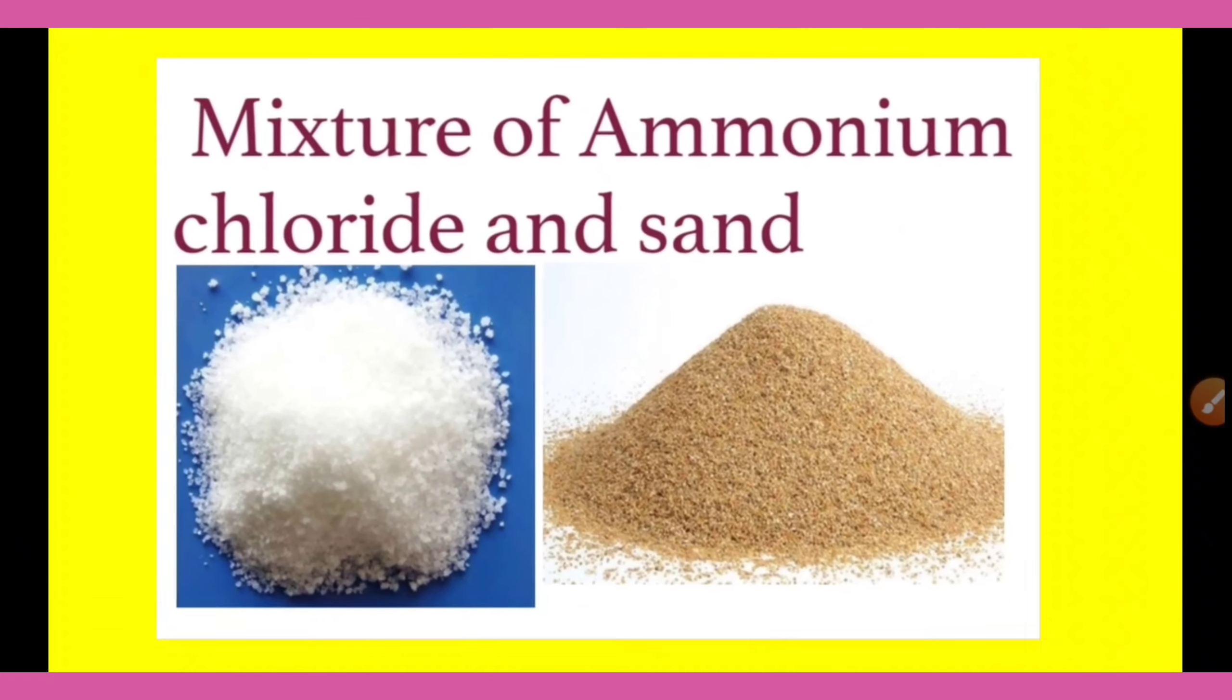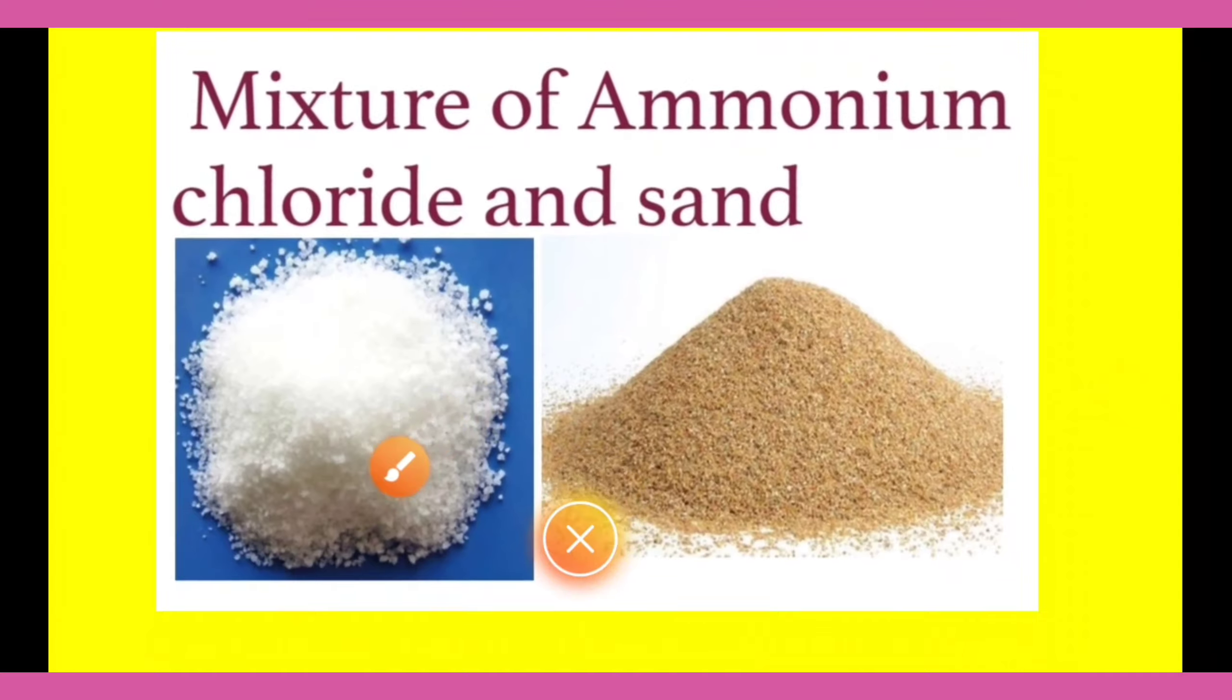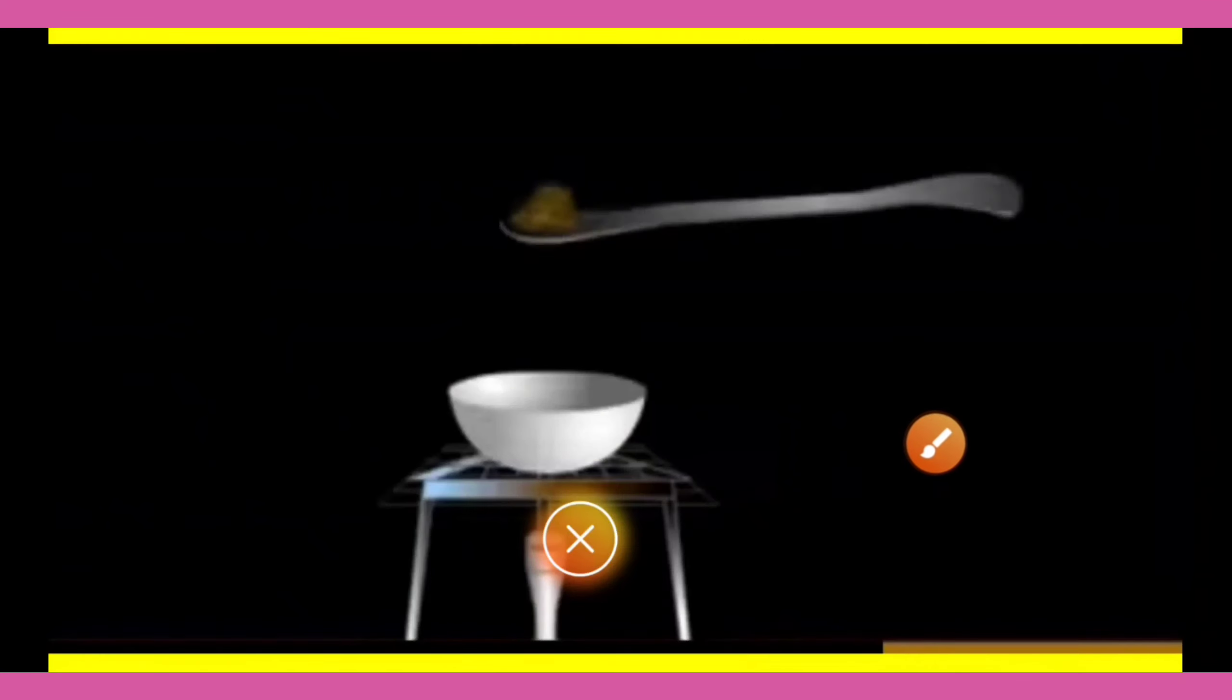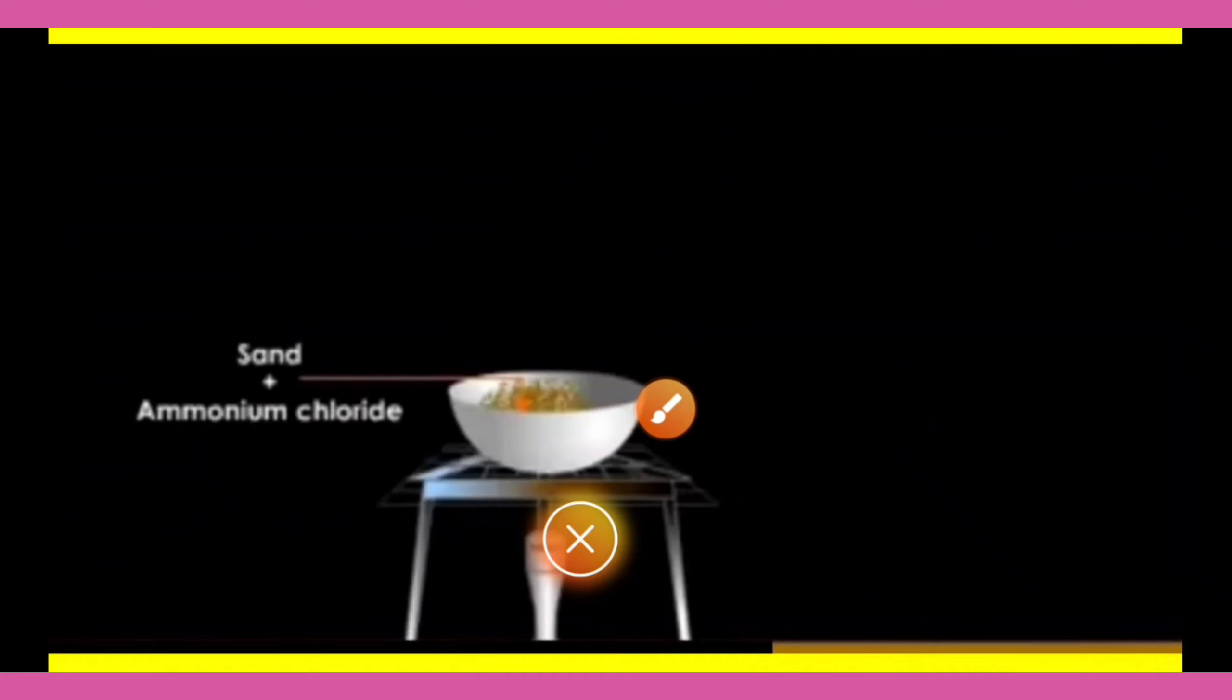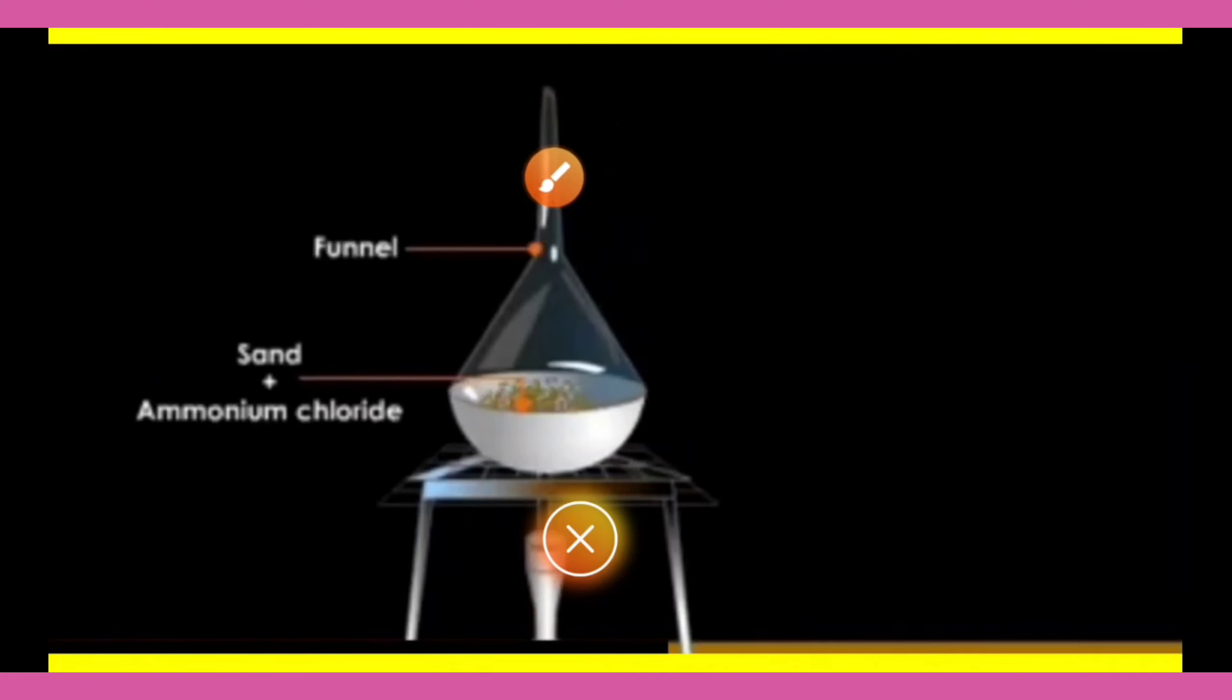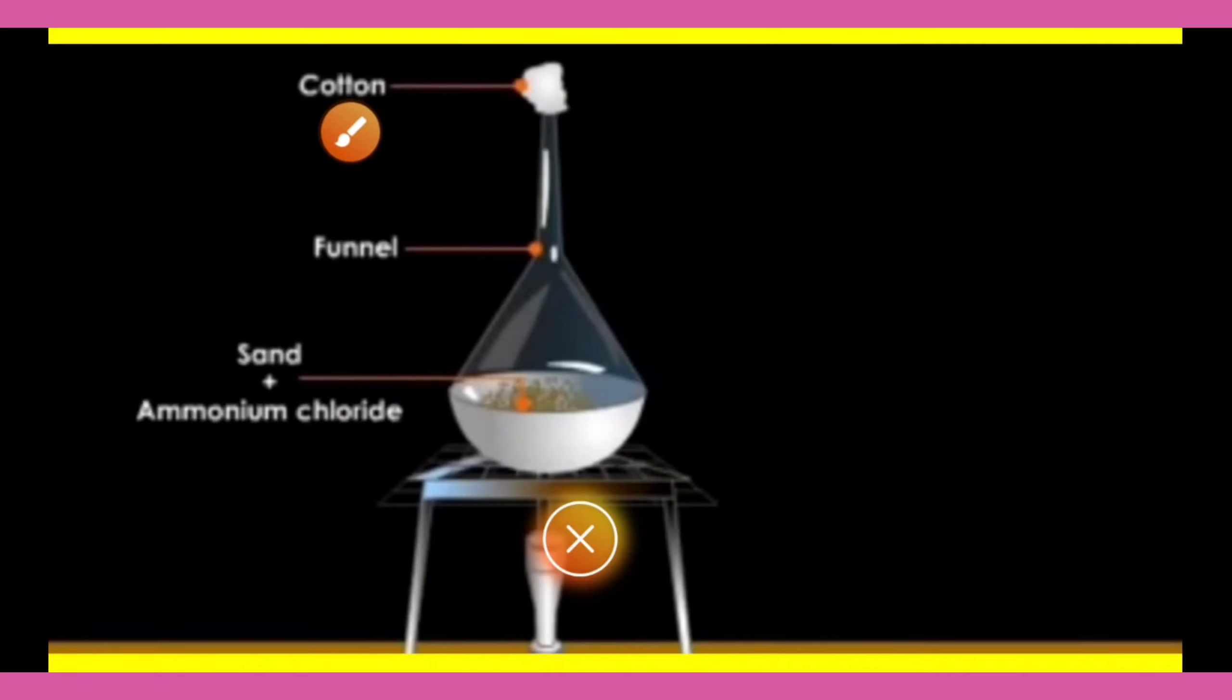Let's learn about sublimation by using an experiment. We are going to take ammonium chloride powder and sand. The powder mixture of ammonium chloride and sand is taken in a china dish and covered with an inverted funnel. The open end of the stem of the funnel is closed using cotton. Then, the china dish is heated.